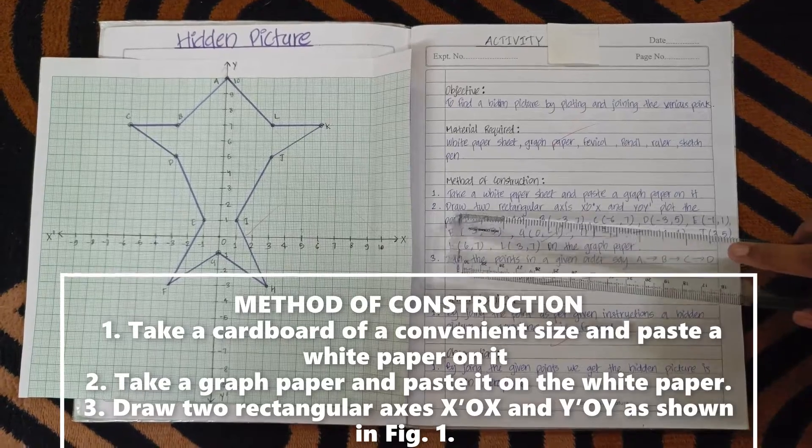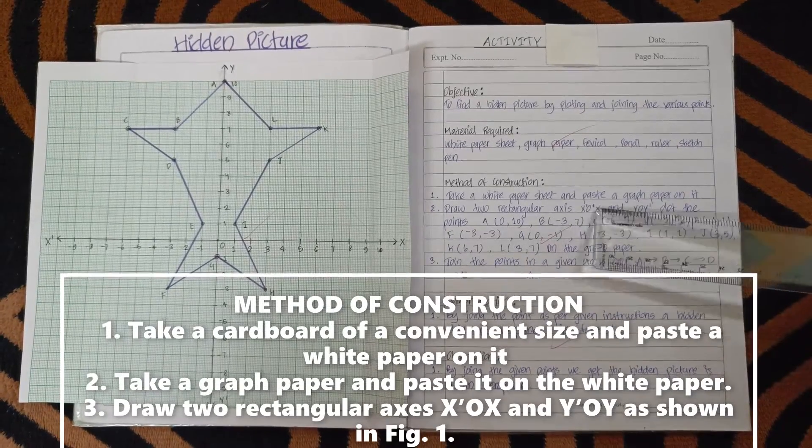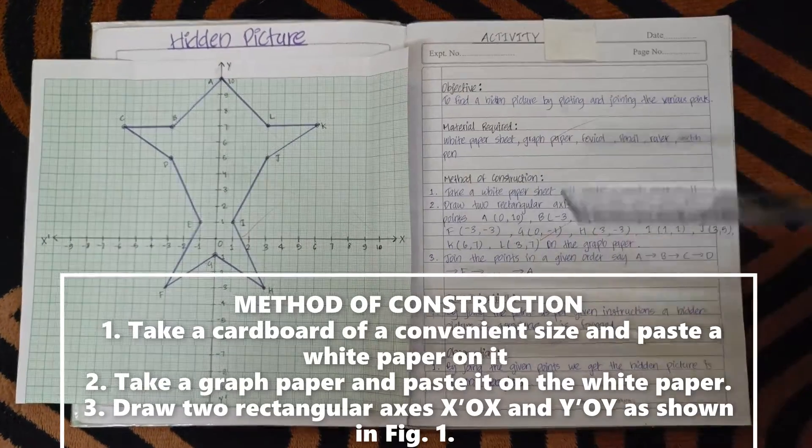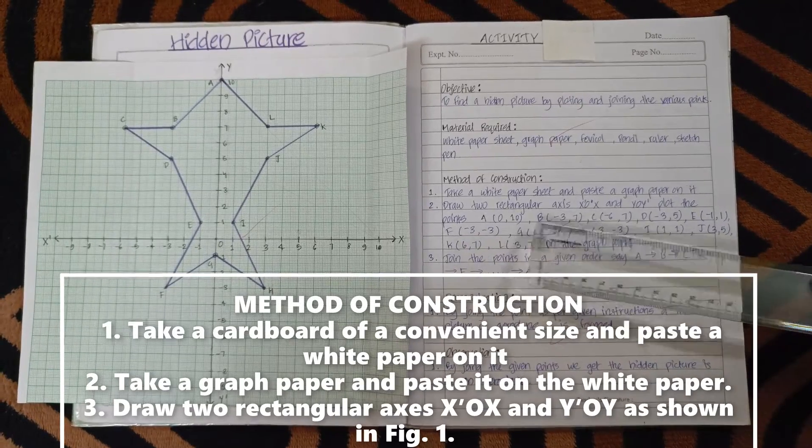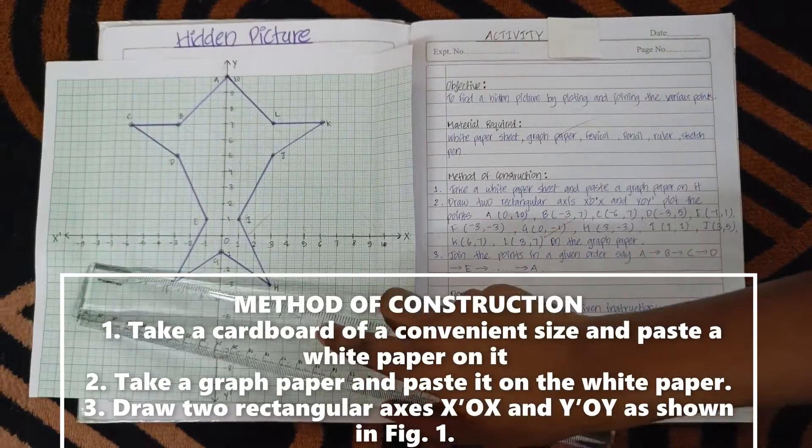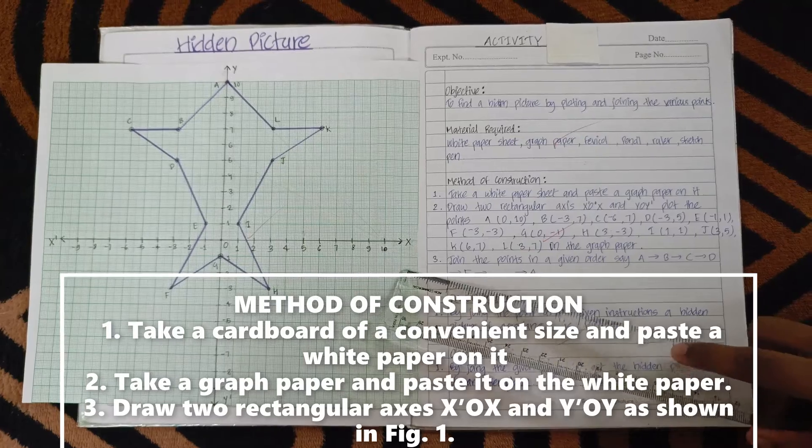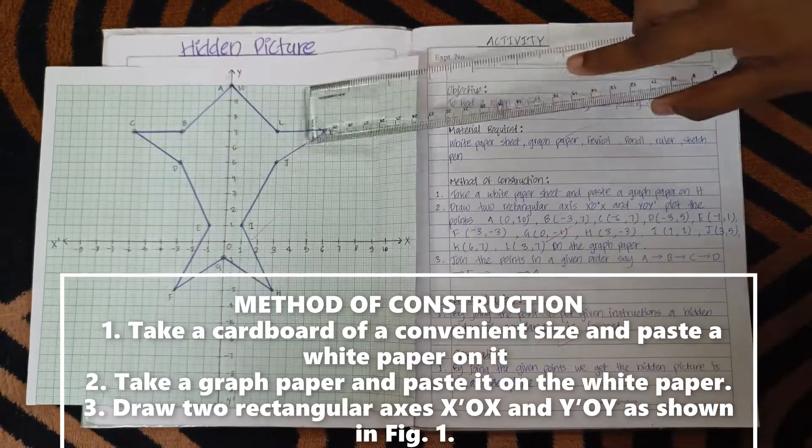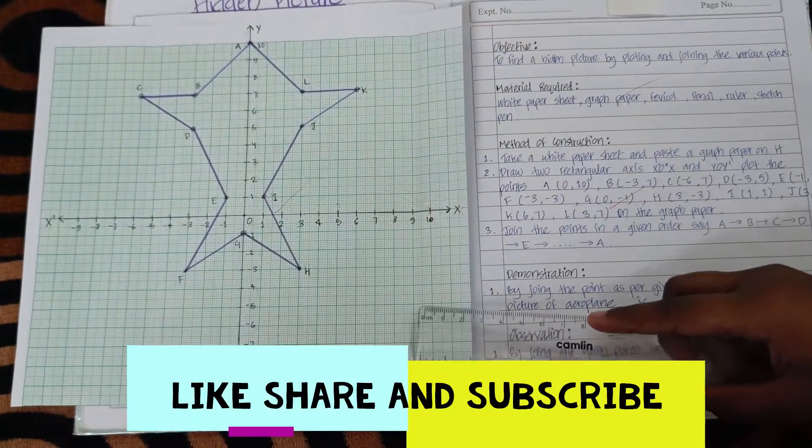Method of construction: Take a white paper sheet and paste graph paper on it. Draw two rectangular axes, x-axis and y-axis. Now plot the points.